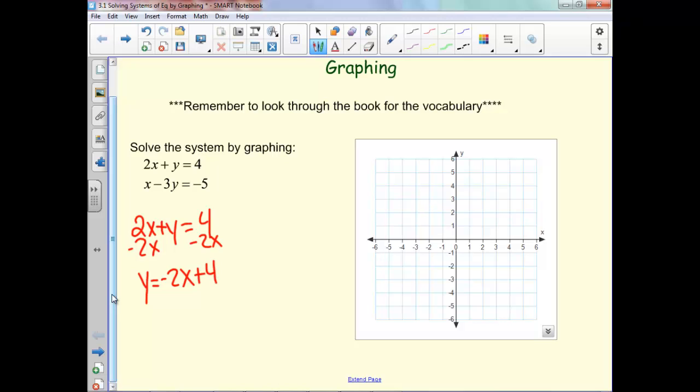And so now remember that means the y-intercept is 4, and our slope is negative 2, or negative 2 over 1. So down 2 over 1, we'd have our line right there.